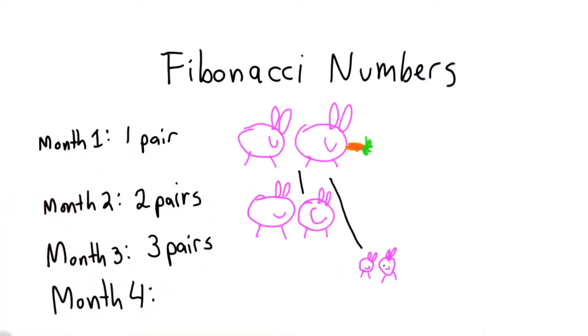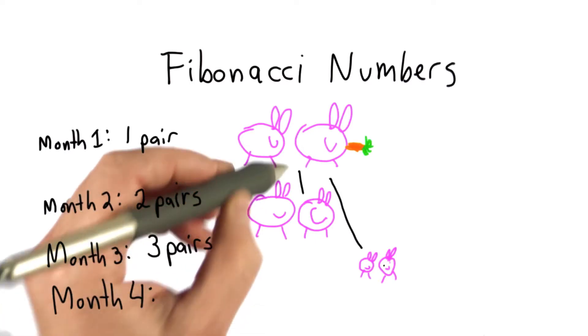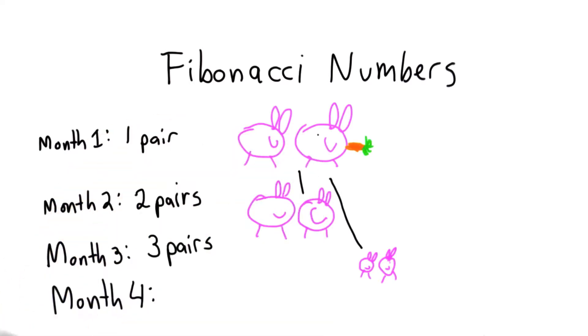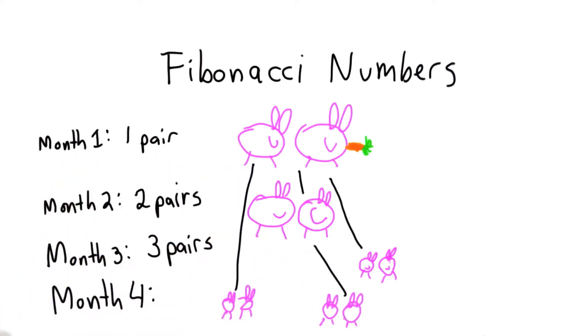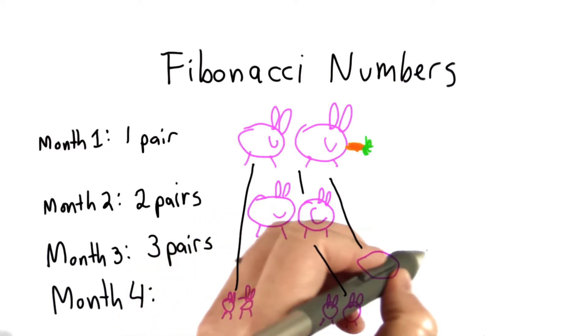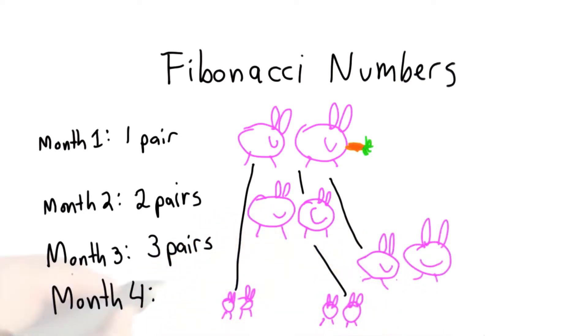In month four, we still have the three pairs of rabbits we had. Rabbits never die in this model. The two pairs that are mature will both now produce new rabbits, so we have two new pairs of baby rabbits. The baby rabbits that were born in month three are now mature. So we have three pairs of mature rabbits and two pairs of baby rabbits. We have five pairs of rabbits total.